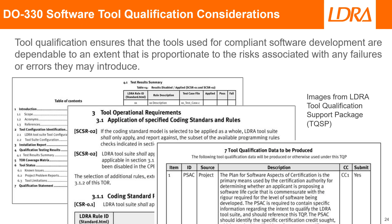The complex safety-critical systems developed in accordance with DO-178C depend on tools for automation and efficiency. Tool qualification ensures that the tools used for their development are dependable to an extent proportionate to the risks associated with any failures or errors they may introduce. DO-330 is relevant to all safety-critical application development activities involving software tools, including software development. These images are examples of content from the LDRA tool qualification support packages, which are designed to make the process easier.